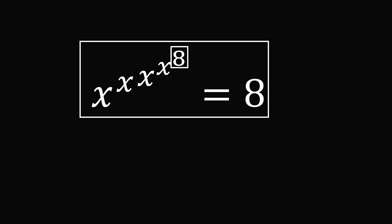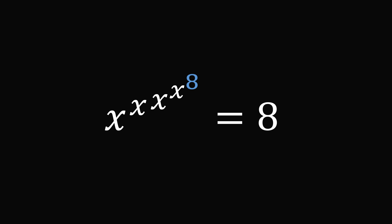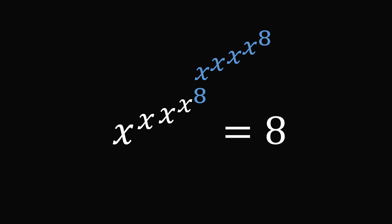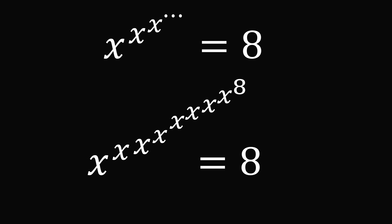We could substitute one more time, bringing in this 8 and substituting the entire left-hand side for it. We end up with x to the power of x to the power of x to the power of x to the power of x to the power of x to the power of x to the power of 8 equals 8. You can imagine continuing this pattern, and if we take the limit, we get x to the power of x to the power of x repeated infinitely many times, all equal to 8.